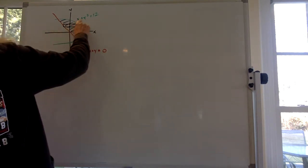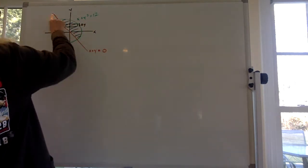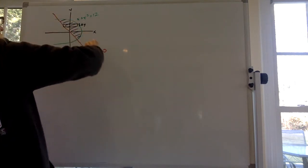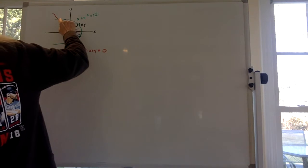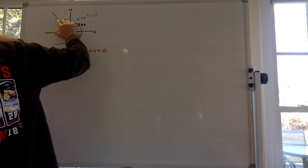So one function is x plus y squared equals 12, it's this sideways parabola, and the other function is this line x plus y equals 0. So what is the area that's encapsulated and bounded by the two?